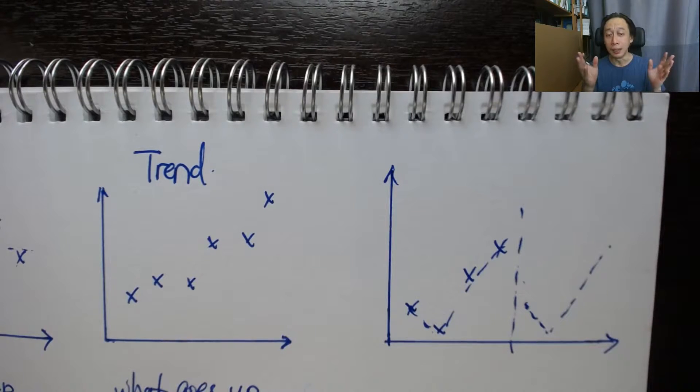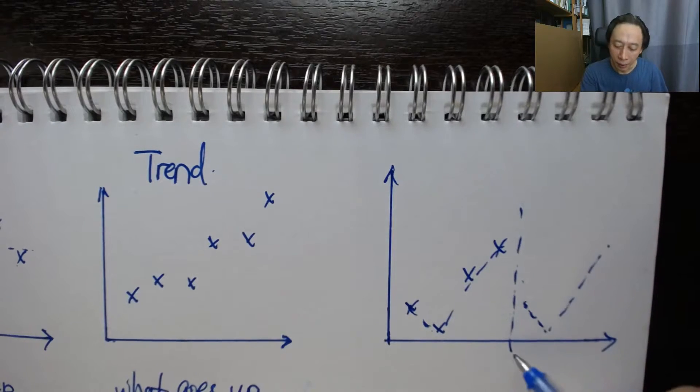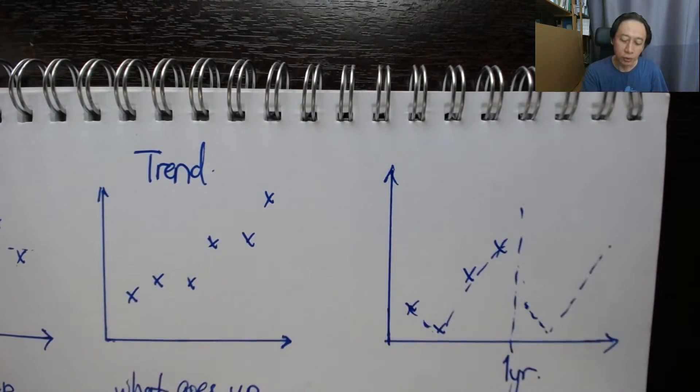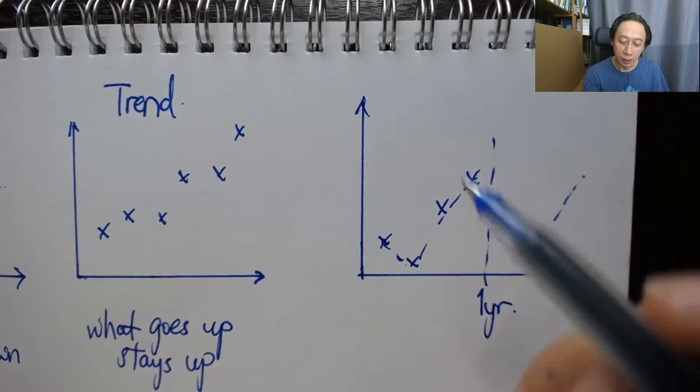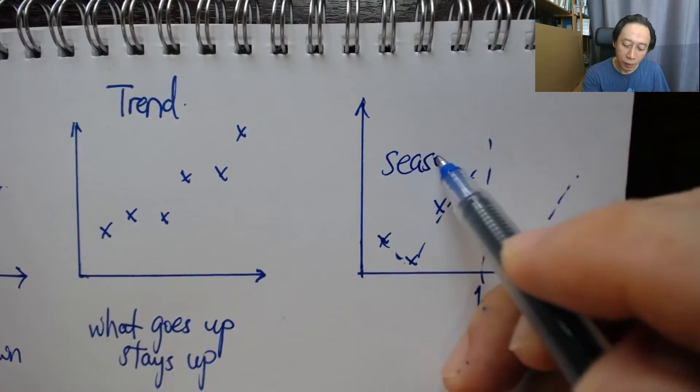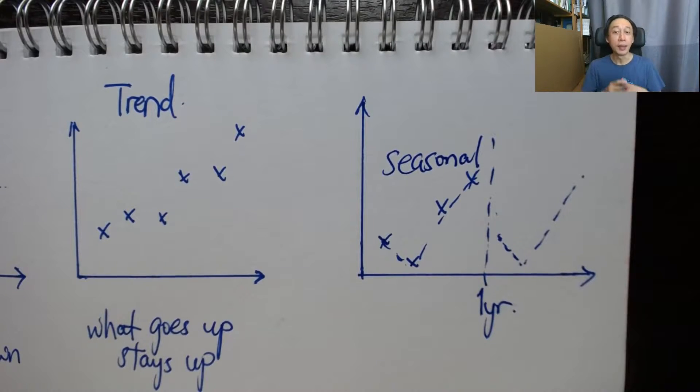For cyclical, that is like seasonal, except that the pattern takes up longer than a year. So if it's within a year, then this is seasonal. If the pattern stretches beyond a year, then it is called cyclical.